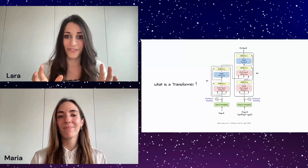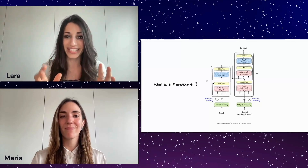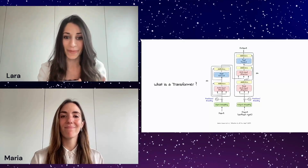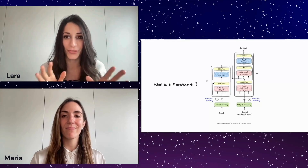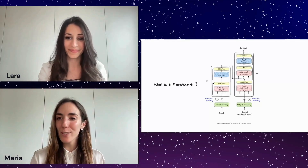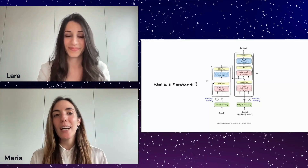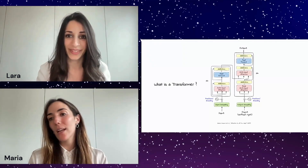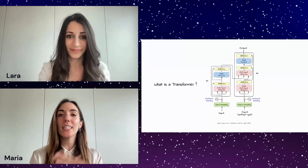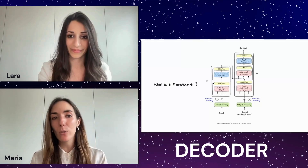Here we have a very complicated diagram taken from a paper introducing the transformers. Can you explain a bit more about this architecture and how it works at a high level? A transformer architecture usually has two parts: the encoder and the decoder.